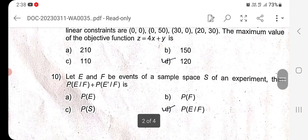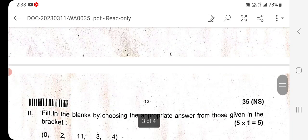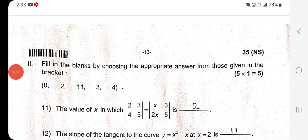Question 10: Let E and F be events of a sample space S of an experiment, then P of E bar F plus P of E dash bar F is option D, the right answer. Question 2: Fill in the blanks by choosing appropriate answers from those given in the brackets.